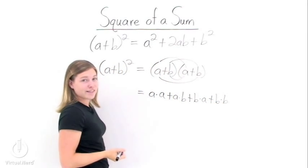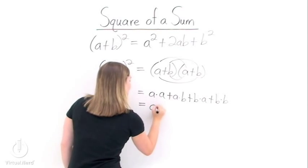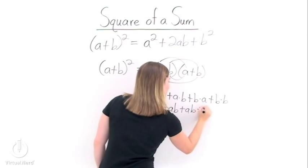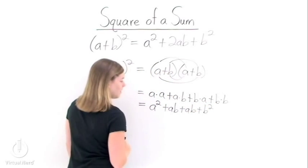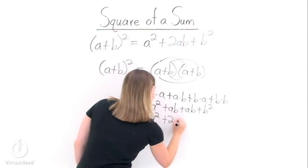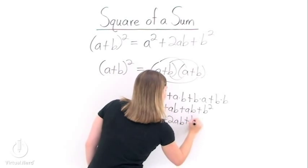Now we just need to simplify. We get a squared plus ab plus another ab plus b squared. Simplify once more, and we get a squared plus 2ab plus b squared.